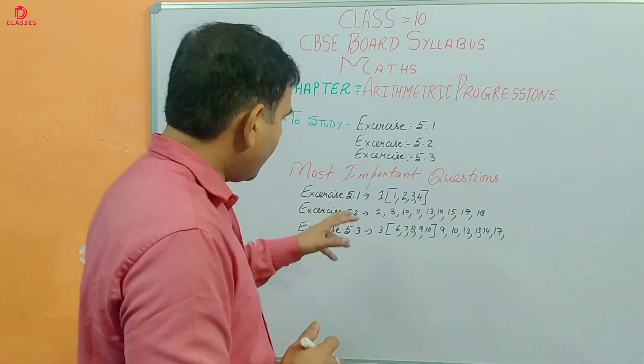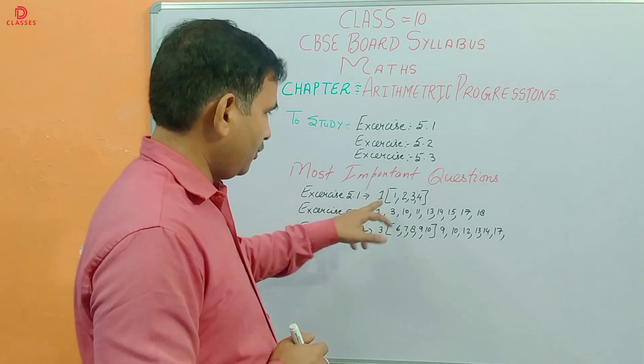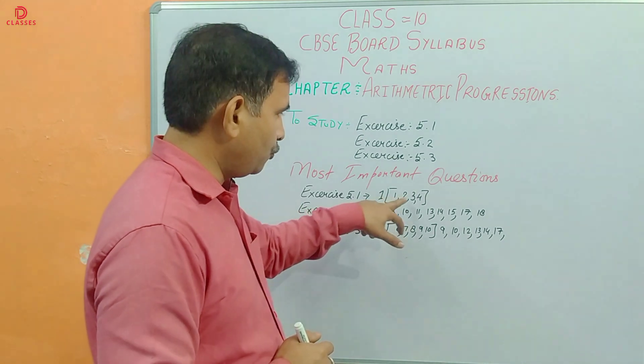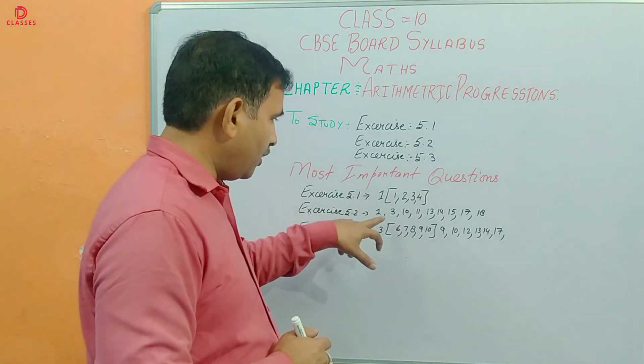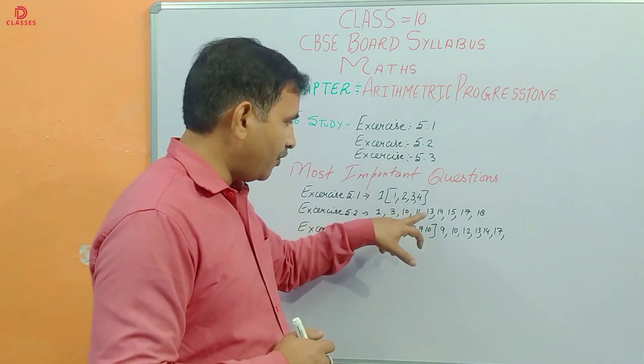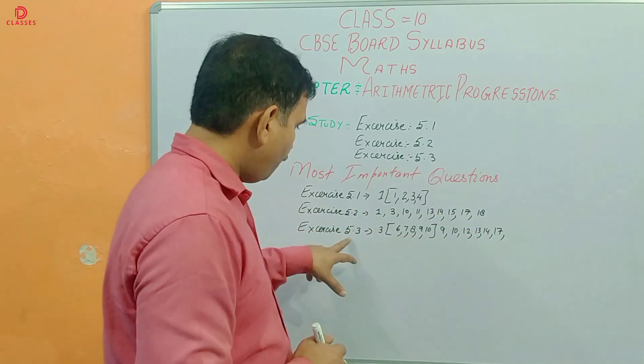Exercise 5.1 is a number-one priority topic. The important question numbers from Exercise 5.1 are: 1, 2, 3, 4, 5, and from 5.2: 1, 3, 10, 11, 13, 14, 15, 17, 18.